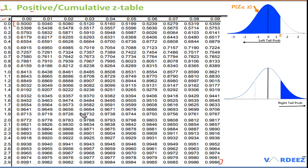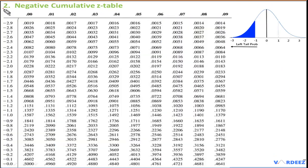There also exists a negative z-table. It starts from zero and goes to the negative side of the distribution — all values listed are negative. This table represents the other half of the distribution, covering all probabilities on the negative side.